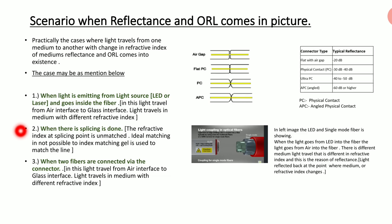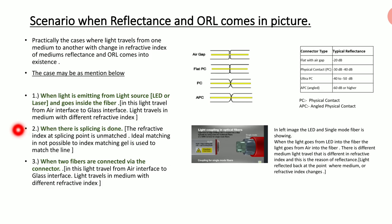The second case: when splicing is done, the refractive index at the splicing point is unmatched — ideal matching is not possible. To match the index at a very high level, an index matching gel is used, which can improve ORL. However, whenever there is a splice, a small amount of reflection will occur, so reflectance and ORL come into the picture.